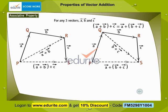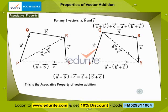Hence, a plus b plus c is equal to a plus b plus c. This is the associative property of vector addition.